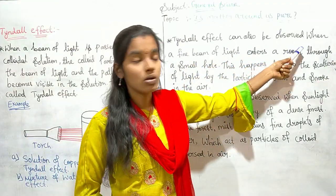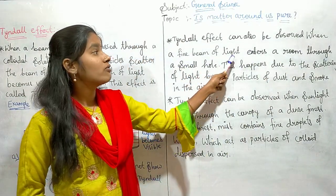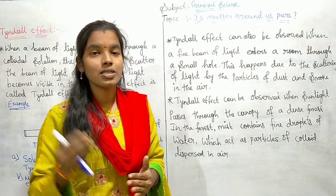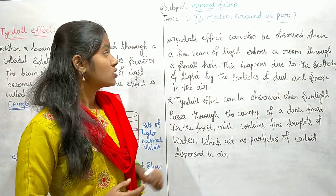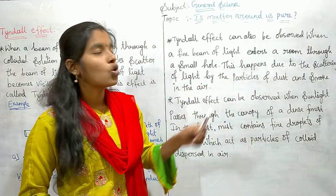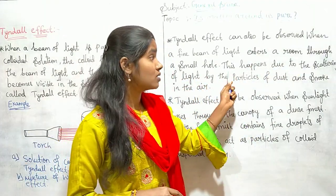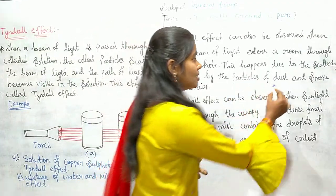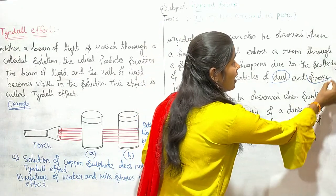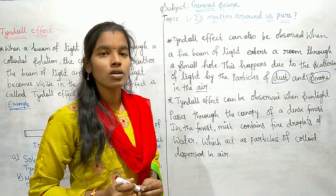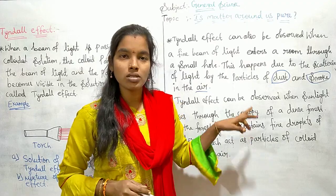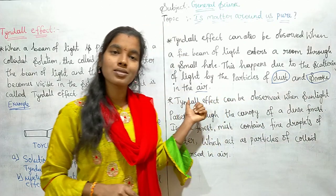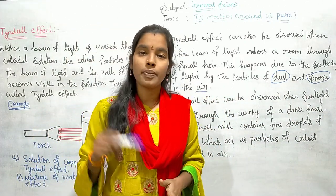Tyndall effect can also be observed when a fine beam of light enters a room. You might have observed that when light enters through a small hole in a room, we can see the path of light. This happens due to the scattering of light by the particles of dust and smoke in the air. Because of these particles of dust and smoke present in the air, you are able to see the path of light.